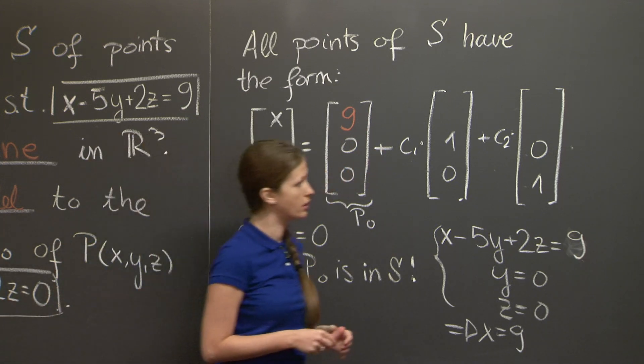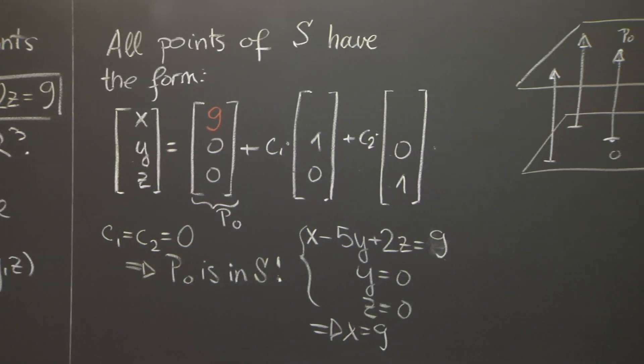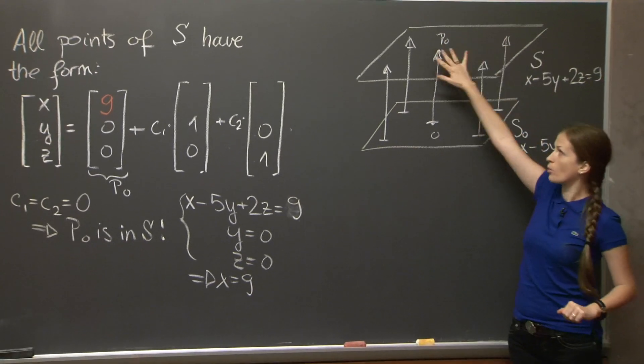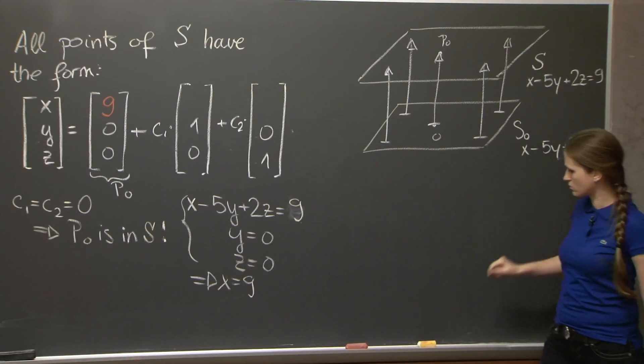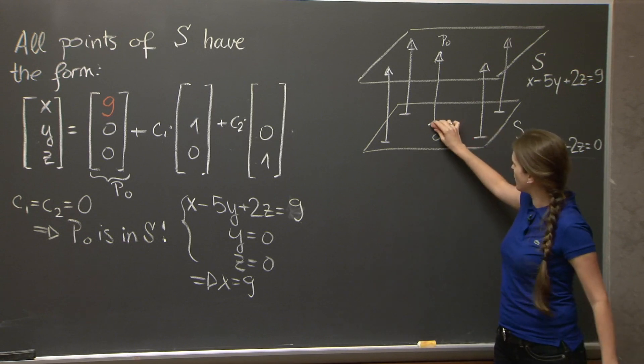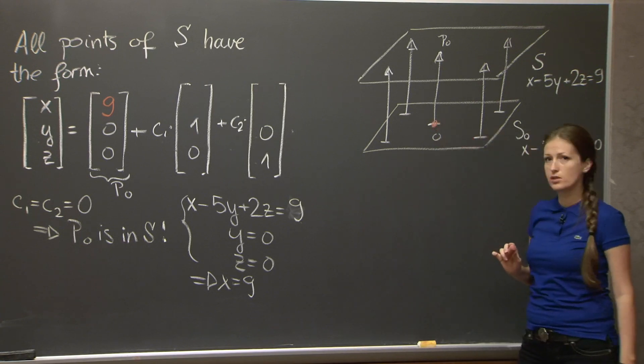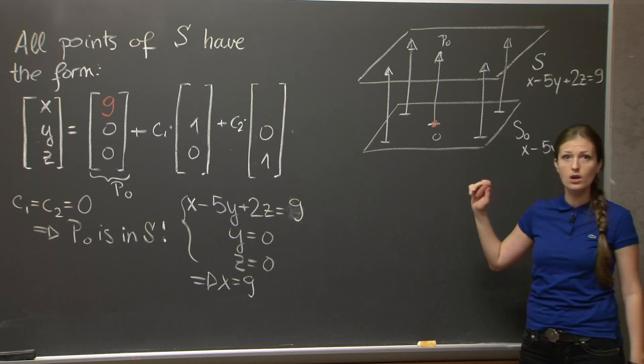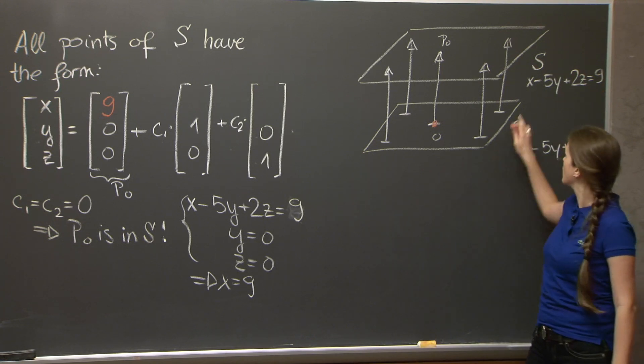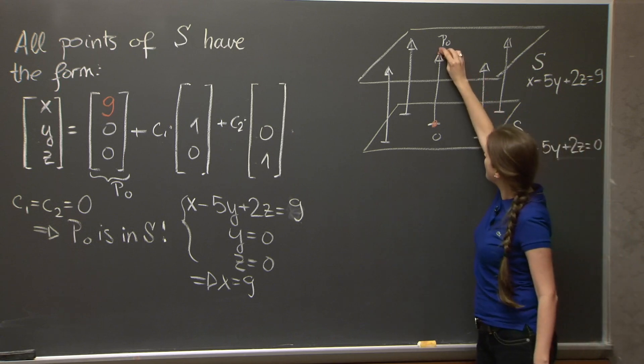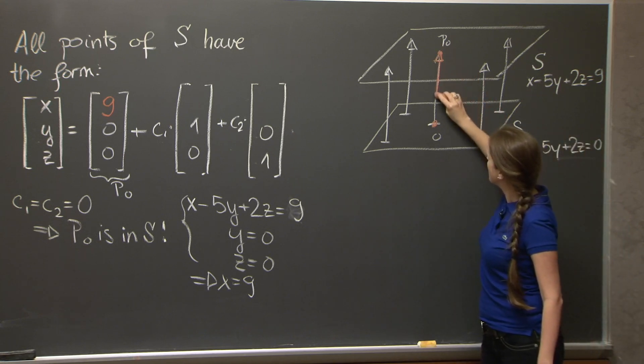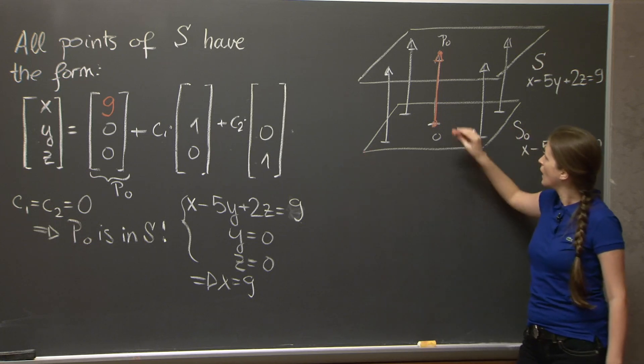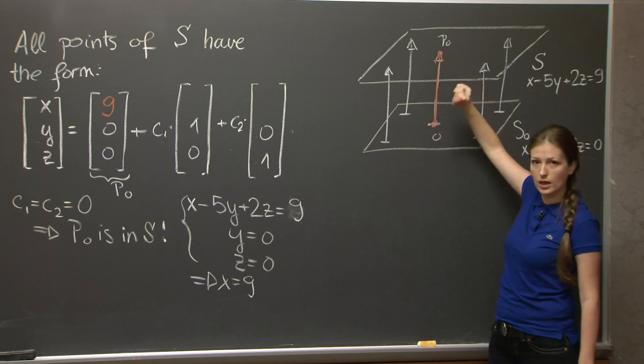Before we fill them, let me show you a picture that I drew here. So we have these two planes, S₀ and S, which are parallel. They're given by these equations. And the plane S₀ has a point 0 in it, because the equation is x - 5y + 2z = 0, so it's satisfied by (0, 0, 0). The plane S has this point p₀ in it, which is (9, 0, 0). We just figured this out.